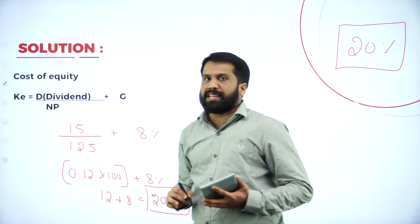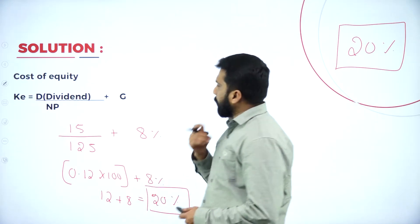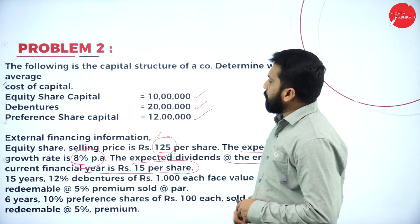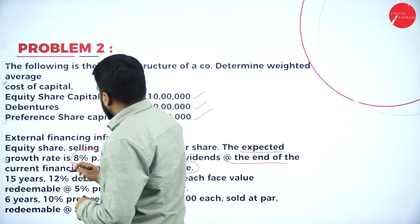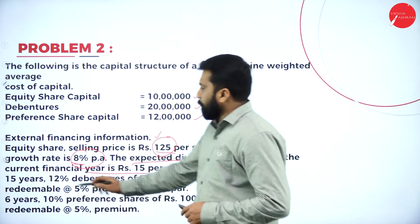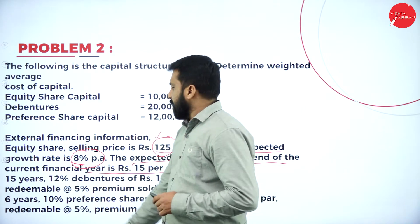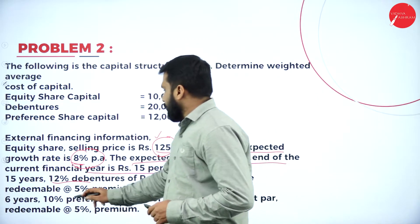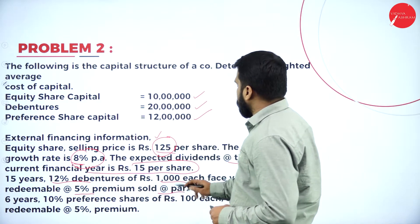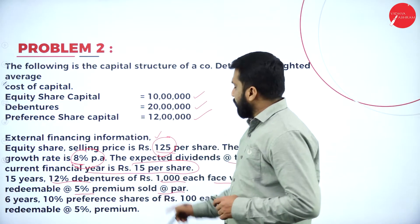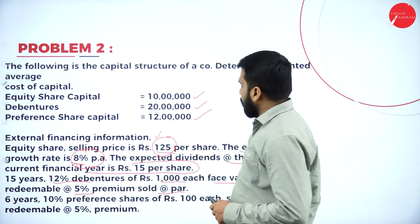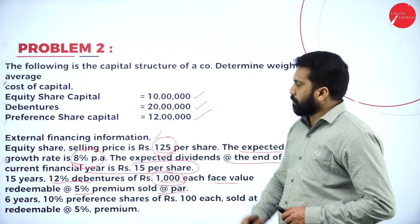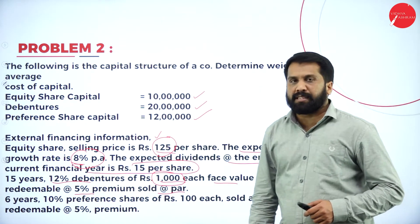Now I will go to the second one: cost of debenture. Going back to the question for the debenture information. It is a 12% debenture of rupees 1000 each, redeemable over 15 years at 5% premium, sold at par. So the face value is 1000, sold at par meaning 1000, redeemable at premium: 1000 plus 5% equals 1050. Number of years is 15.